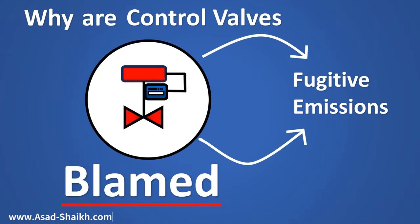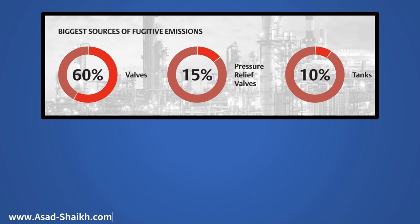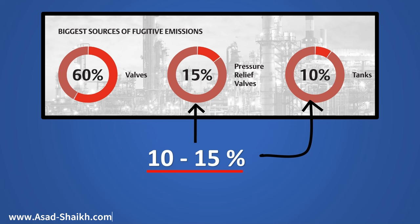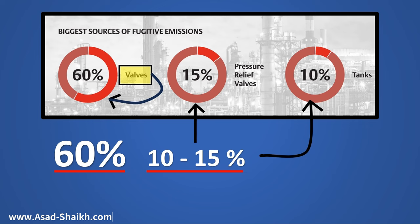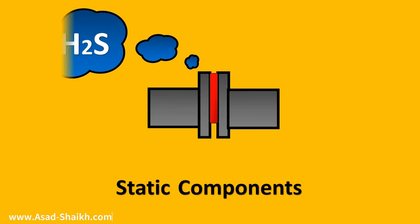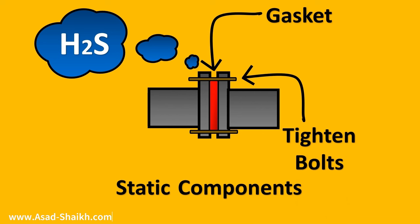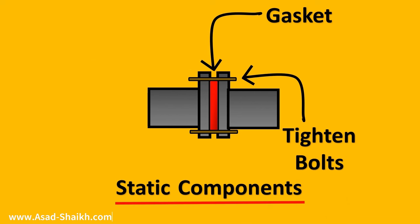Why are control valves blamed when it comes to fugitive emissions? In a plant there are tanks and relief valves available, so why control valves? The reason is, if you look at the stats, only 10 to 15 percent of fugitive emissions come from pressure relief valves or tanks, but a whopping 60 percent is from valves. These are static components, meaning if there is H2S or any fugitive emission happening, you can put in a gasket and tighten the bolts. Once done, because these are static components, you can easily reduce the fugitive emissions.